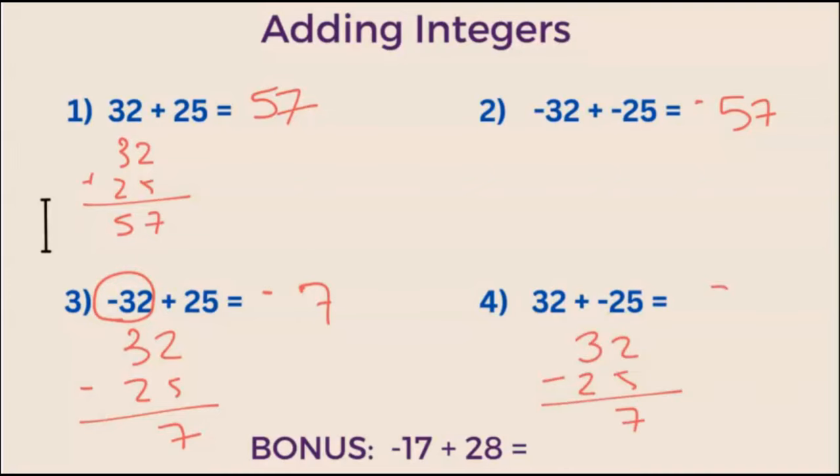So we know 32 minus 25 is equal to 7. The absolute value of 32 is 32. The absolute value of negative 25 is 25. 32 is greater. This integer is positive, so our answer will be positive.